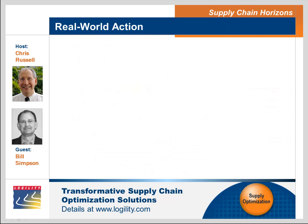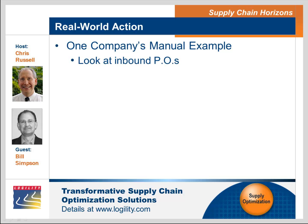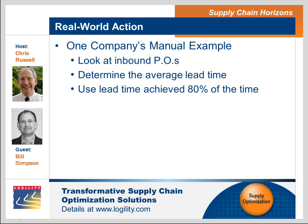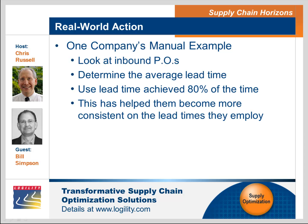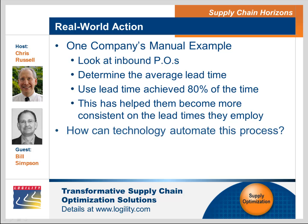So how do you get that information into an actionable state within your supply chain planning process? Mostly it's manual. One of the companies we work with tracked, on a monthly basis, all of their inbound purchase orders and looked at what their average lead times were. They decided to select an 80% rule — if it was 80% of the time, that's what they would use. So they wouldn't take the highest; they wouldn't take the lowest. And that's helped them. But one of the things I'm curious about is what types of technologies companies can employ to automate this, because if you're talking about tens of thousands of purchase order line items on a monthly basis, tracking that in a spreadsheet is very labor intensive.